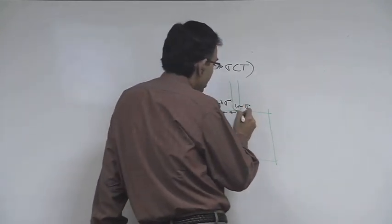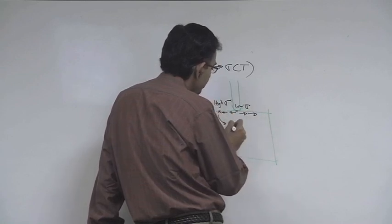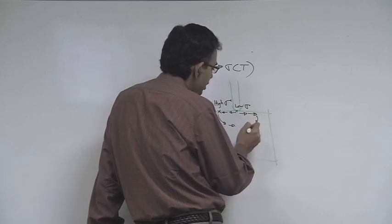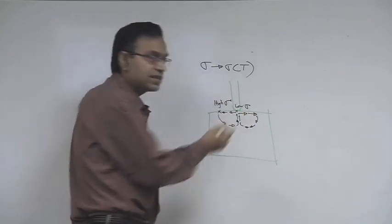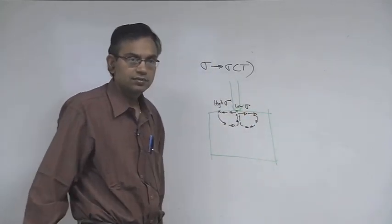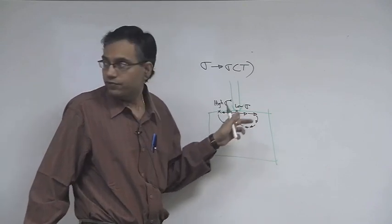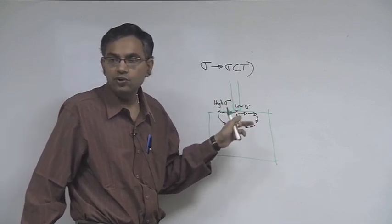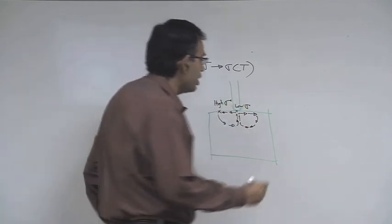Similarly, on the other side the same type of flow will occur, and because of inertia and continuity, there is a circulation loop. This type of flow due to surface tension gradient is called thermocapillary flow, or in convection terminology, Marangoni convection.